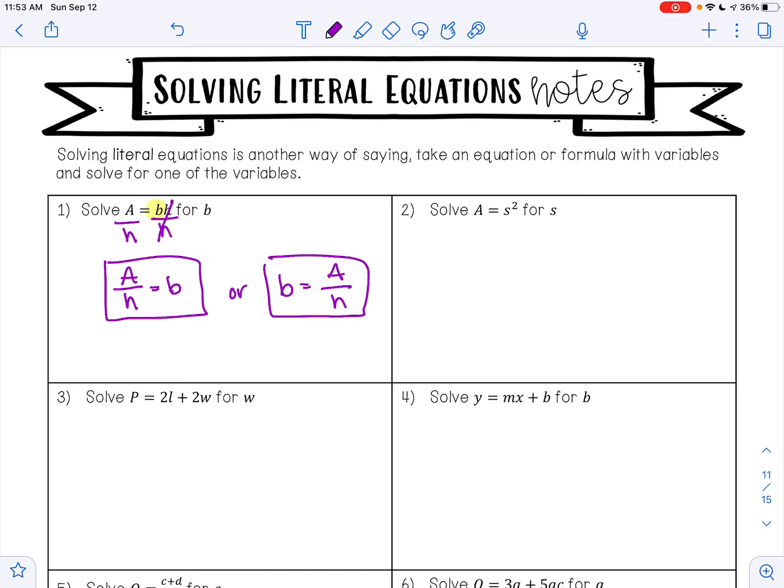On example two, it says solve A equals S squared for S. The inverse operation of a square is a square root. So to undo a square, we would take the square root of both sides. So I would have the square root of A is equal to S because the square undoes the square root.